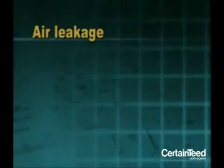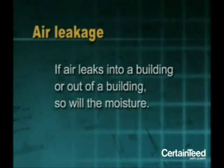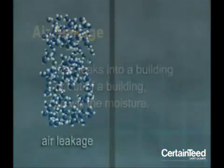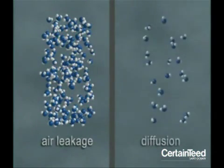Another way airborne moisture moves through a building is as the result of air leakage. Since the moisture is in vapor form and mixed in with the air, if air leaks into a building or out of a building, so will the moisture. Moisture carried in or out of a building due to air leakage can be 10 times to 100 times greater than moisture transferred by diffusion.